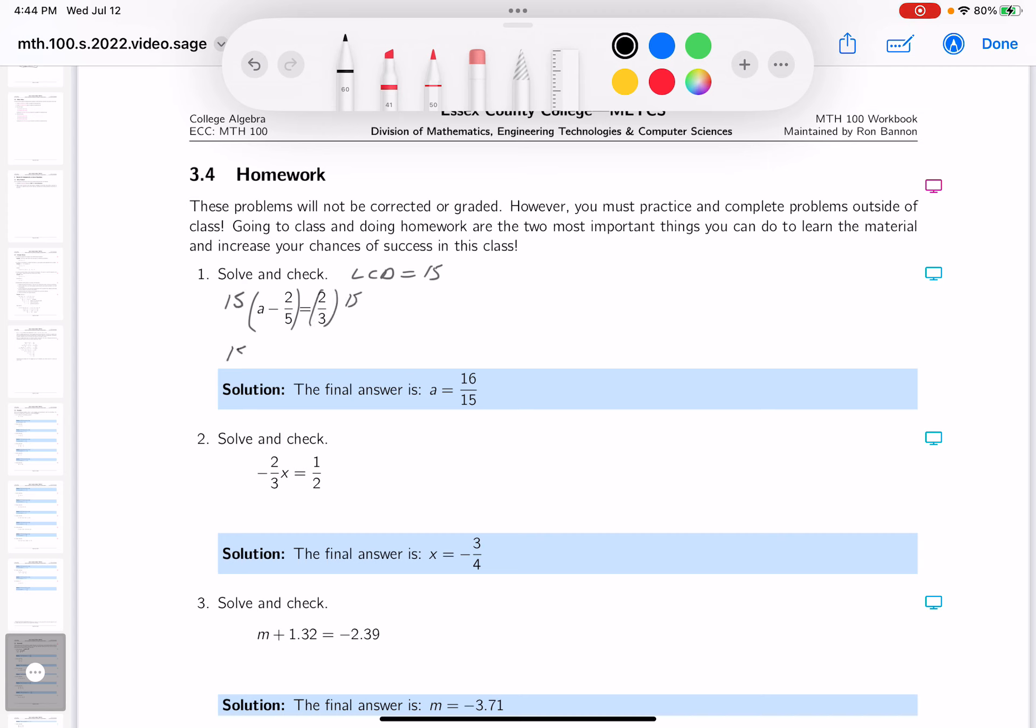What do you get? 15 times A. This is a distributive property multiplication, minus 15 times 2 fifths. We'll do that in a second. What do you get over here? 2 thirds times 15.